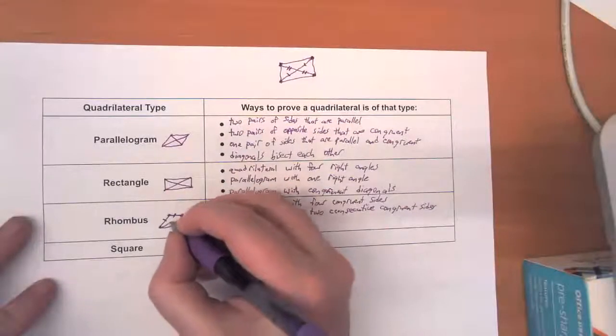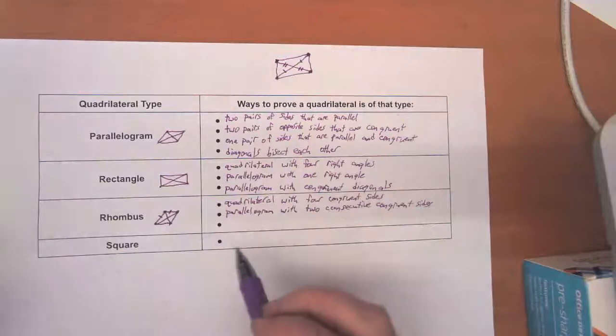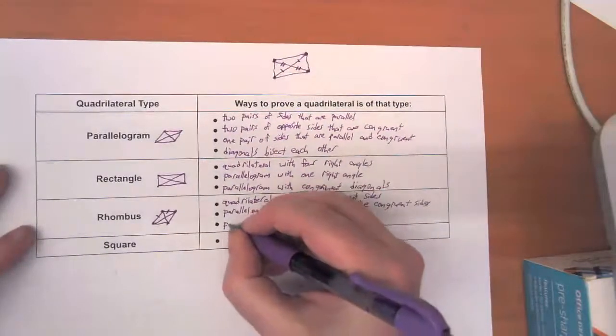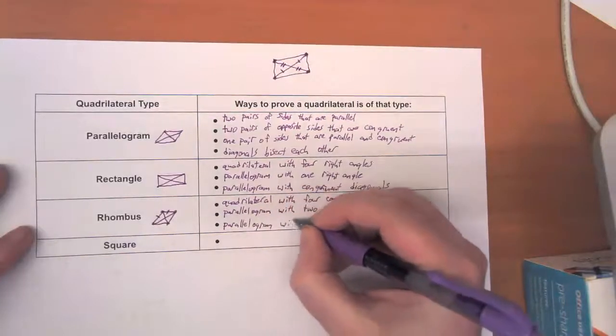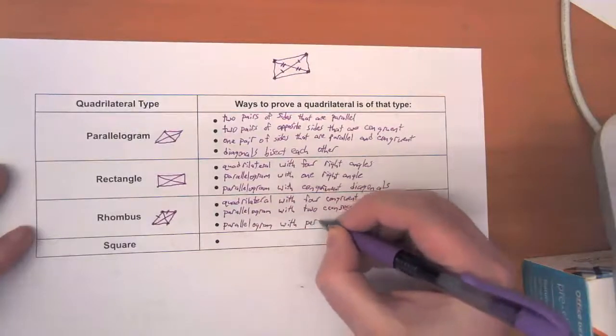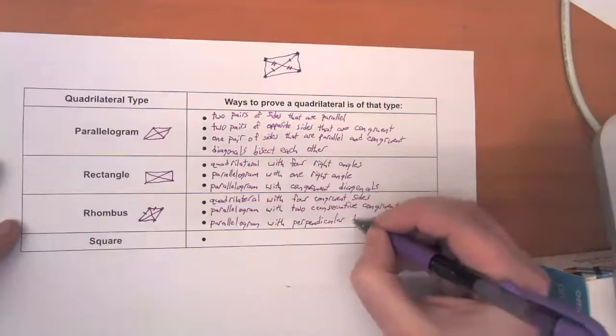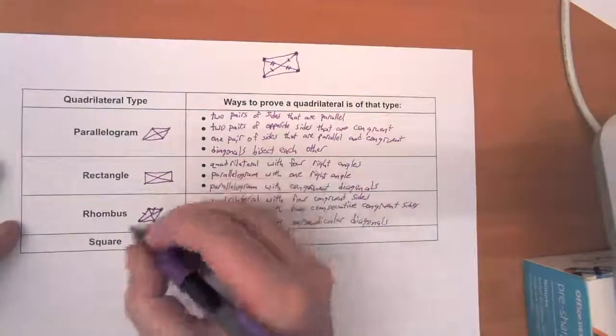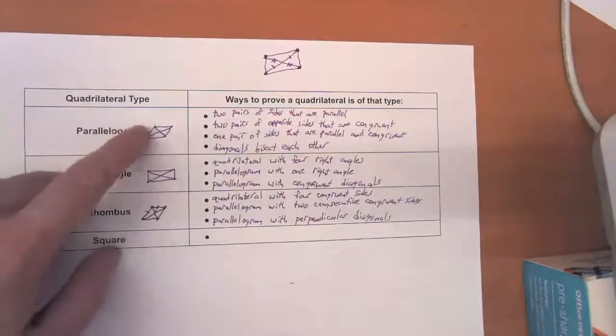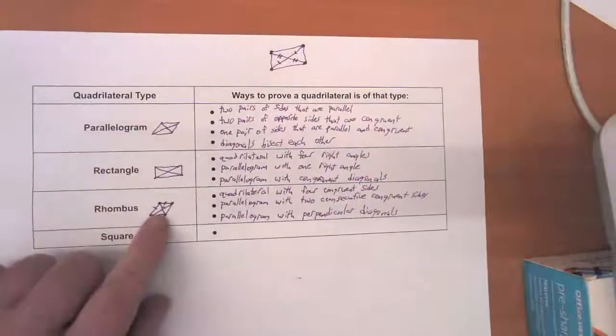And then the last thing is, once again, something that's special about these diagonals. With the rectangle, they were congruent to each other. Here, the diagonals of a rhombus are not congruent to each other, but they do have an interesting feature, which is that the diagonals are perpendicular to each other. So that is, it breaks it into four triangles. Every time a rectangle is broken up by its diagonals, it gets broken into four triangles. Here, they're all right triangles.